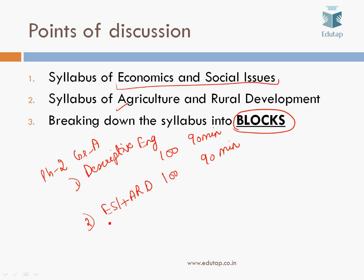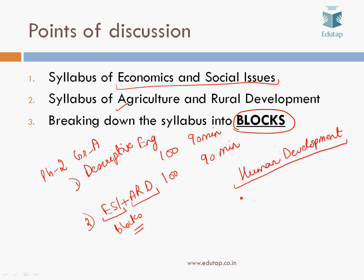We'll be discussing the syllabus for ESI and ARD separately in this video and we'll divide the given syllabus into blocks. What I mean by blocks is that when you are preparing a particular topic — let's say the topic of human development — you should know exactly what all things you have to cover under this topic, what all subtopics have to be adequately covered, and what all topics have been given in the syllabus itself which are linked to the main heading.